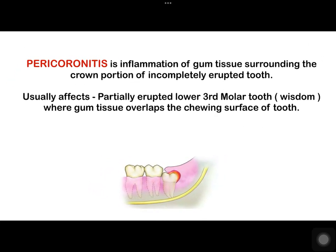So, what is pericoronitis? It is an inflammation of gum tissue surrounding the crown portion of an incompletely erupted tooth. Usually, it affects the partially erupted lower third molar tooth, i.e. the wisdom tooth, where gum tissue overlaps the chewing surface of the tooth.